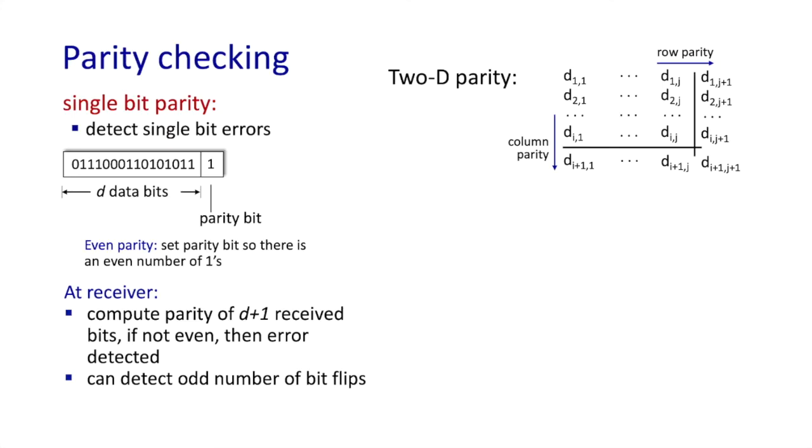You should convince yourself now that two bit errors can always be detected, but the two-dimensional parity check buys us something more, something really special. In the case of a single bit error, it also allows the receiver not only to detect that there's been a bit error, but also detect where that bit error occurred and correct it without retransmission. How cool is that?